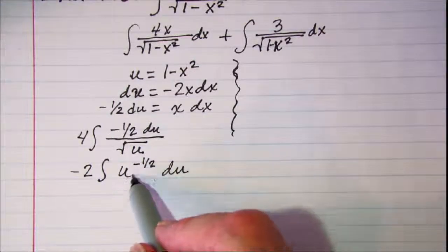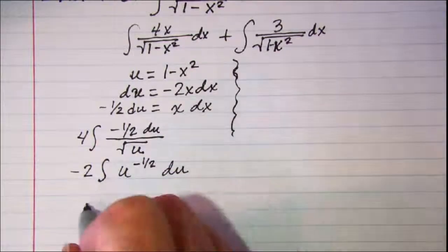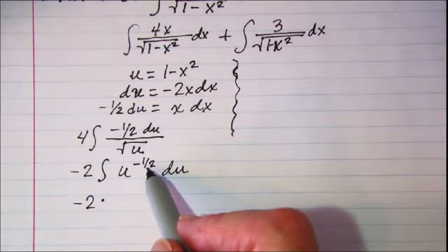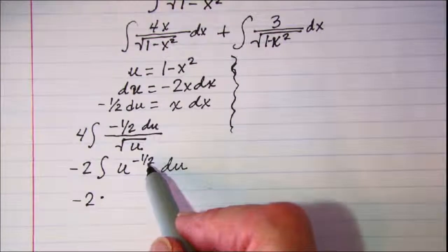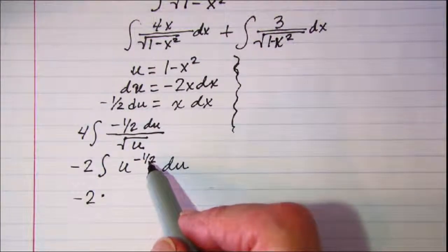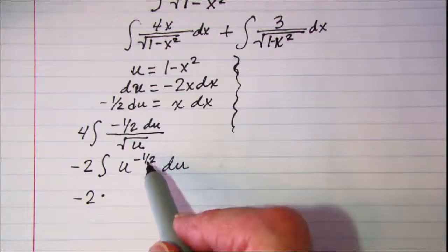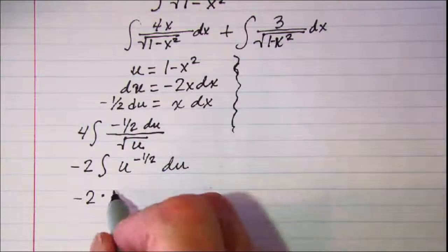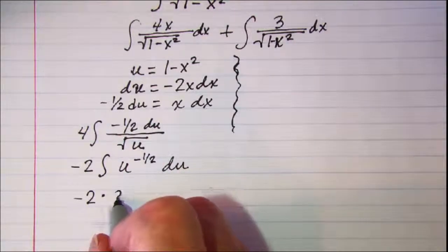So when I integrate this, I have increased the exponent by 1 and divide by the new exponent. So my new exponent will be a positive 1 half, and when I divide by a positive 1 half, that's the same as multiplying by 2.